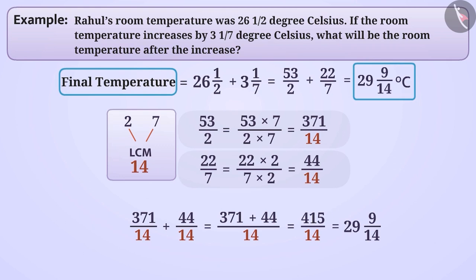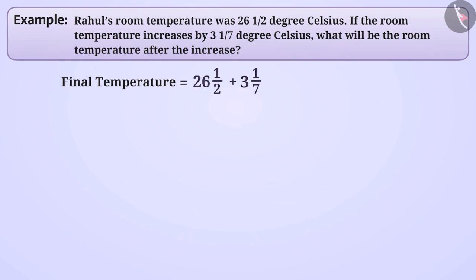We can solve this in another interesting way. We have 26 complete digit in 26, 1 by 2 and 1 by 2 is not a complete digit. So we can write it as 26 plus 1 by 2.